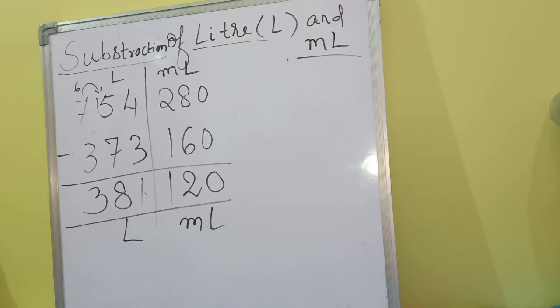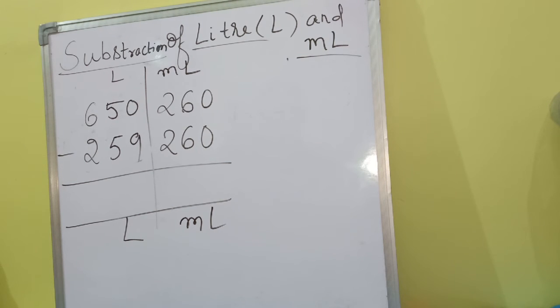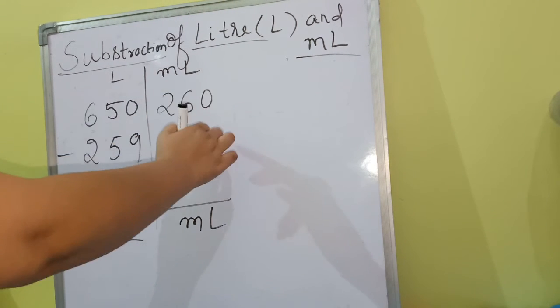Ek aur example dekhte hai. 650 L and 260 milliliters minus 259 liters, sorry 260 milliliters. In dono capacity ko hume subtract karna hai. So first milliliter karenge.